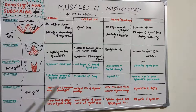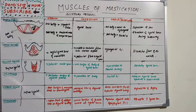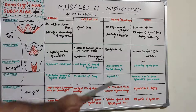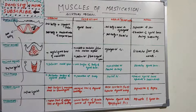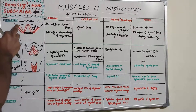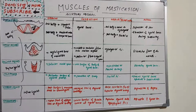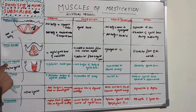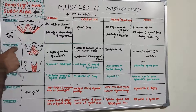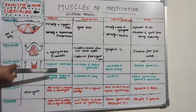The geniohyoid is a short, narrow muscle lying above the mylohyoid. It originates from the inferior mental spine, also called the genial tubercle, and is inserted into the anterior surface of the body of the hyoid bone. Nerve supply is the hypoglossal nerve, and blood supply is from the facial artery. Its action is elevation of the hyoid bone. The stylohyoid is a small muscle lying along the upper border of the posterior belly of the digastric. It originates from the lateral and inferior surface of the styloid process and inserts into the hyoid bone.